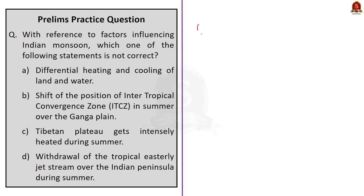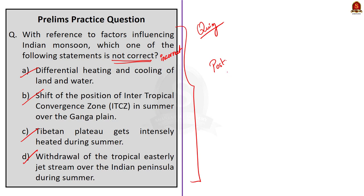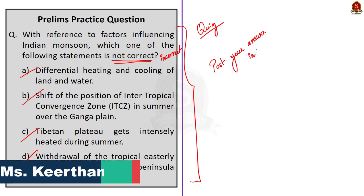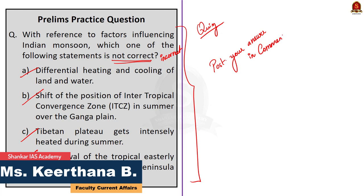The final question is a quiz question for you. With reference to the factors influencing Indian monsoon, which one of the following statements is not correct? Option A: differential heating and cooling of land and water. Option B: shift of the position of the Intertropical Convergence Zone in summer over the Ganga Plain. Option C: Tibetan Plateau gets intensely heated during summer. Option D: withdrawal of the tropical easterly jet stream over the Indian Peninsula during summer. Find the incorrect statement and post your answer in the comment section.